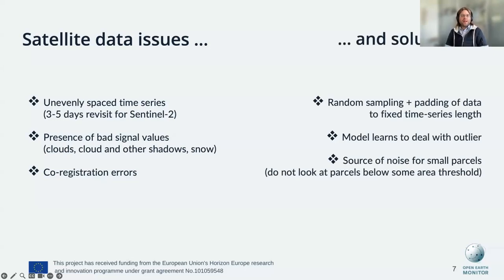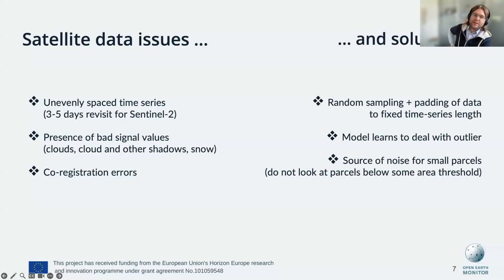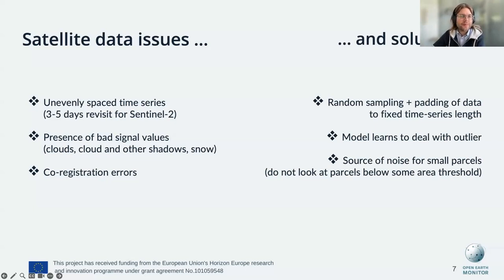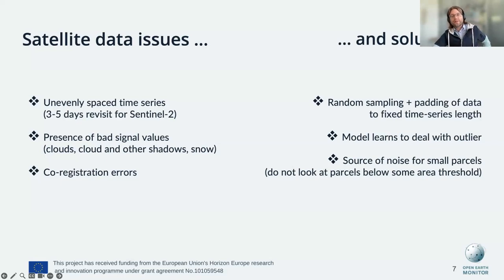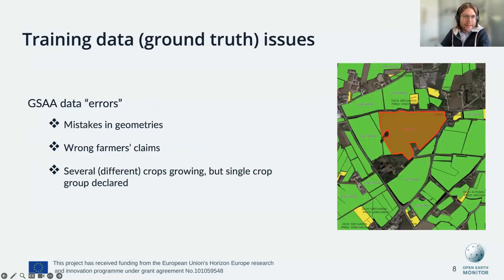We have some solutions: for unevenly spaced time series with LSTM models we can sample a specific number of temporal features, pad the data, and use this as input. The LSTM model itself is quite capable and typically learns how to deal with outliers like clouds and cloud shadows. Regarding co-registration errors — that is particularly tricky for very small parcels — and the solution is that we do not look at agricultural fields smaller than a given threshold size, because we would then be looking at neighboring fields' data.